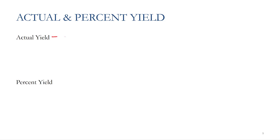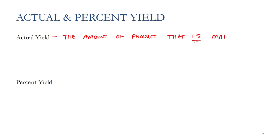This is called the actual yield. The actual yield is the amount of product that is made in a chemical reaction. You can't calculate this — it is done in real life and has to be determined experimentally.